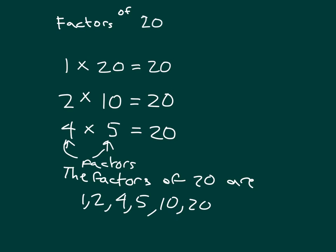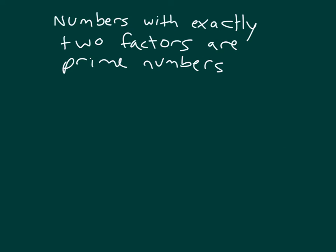Since 20 has more than two factors, it is called a composite number. Say that word: composite. 20 is a composite number. Numbers with exactly two factors are prime numbers. Let's look at the number 13, and we'll also look at the number 17.